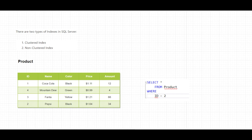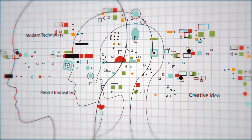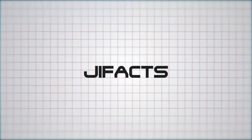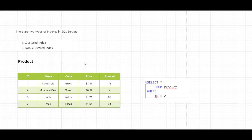Hi and welcome to gfact. Today I'm going to explain the indexes in SQL Server. In front of me I have a table which contains a list of products. On the right side I have a query where I want to get all the products where ID is equal to 2. This query is not very efficient because the table doesn't have any indexes, so it will do a full scan of this table.